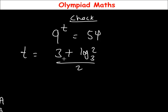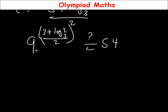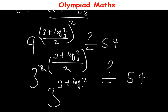Putting the value of t back into the equation to check: 9 raised to the power (3 + log 2 base 3) all over 2 should equal 54. Now 9 can be written as 3 squared, so we have (3²) raised to the power (3 + log 2 base 3) over 2. The 2 in the exponent denominator cancels with the 2 from squaring, giving us 3 raised to the power (3 + log 2 base 3).